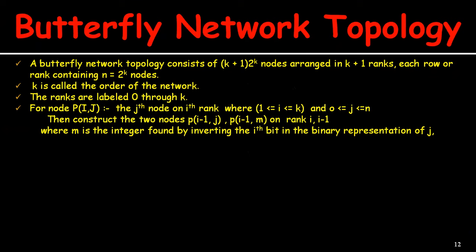The ranks are labeled from 0 through k. For any node p_ij — the j-th node on the i-th rank — where i is between 1 and k and j is between 0 and n, we construct two nodes: p_(i−1, j) and p_(i−1, m) on rank i−1, where m is an integer found by inverting the i-th bit in the binary representation of j.